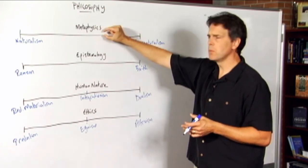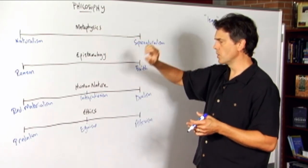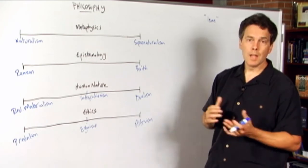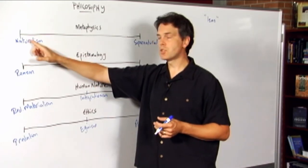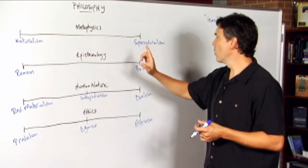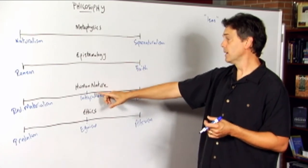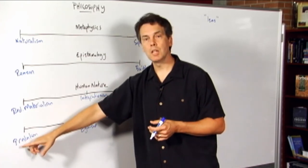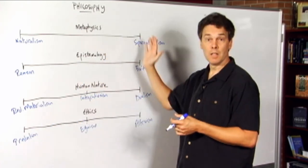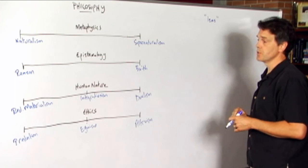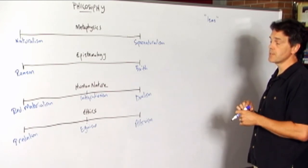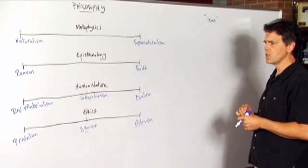So the isms take a position on metaphysics, they take a position on epistemology, human nature and so forth. It may be, for example, that they are naturalistic in their metaphysics or they advocate a kind of faith in their epistemology and integrationism in human nature but predation in ethics. And another ism might take another different set of positions and so they, as packages, disagree with each other.